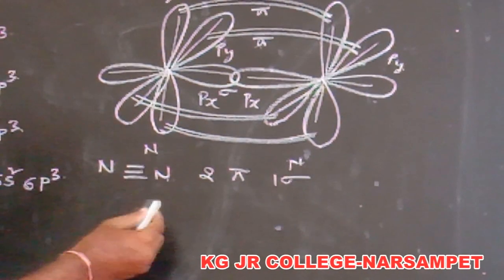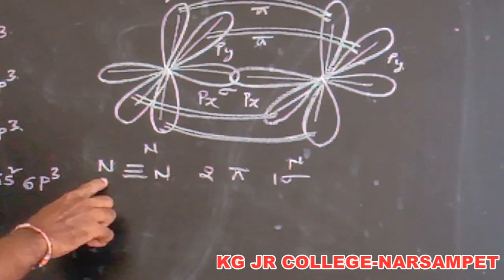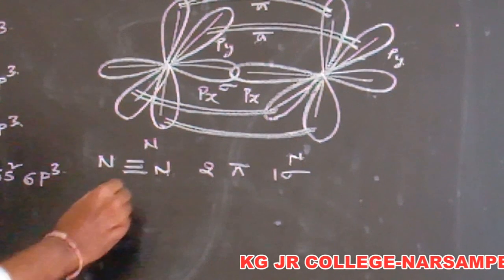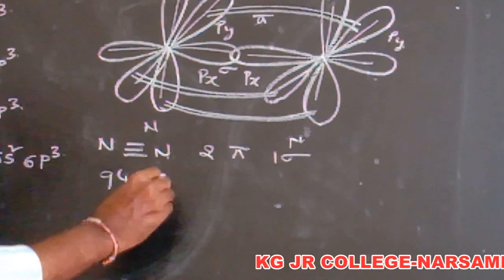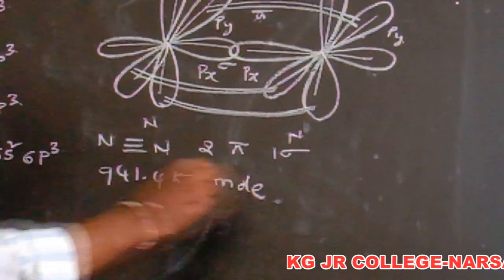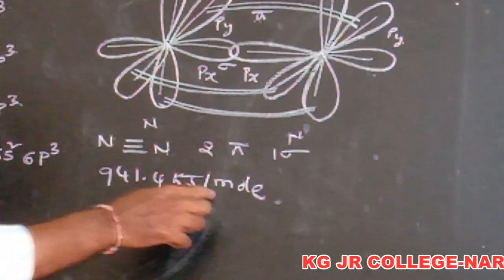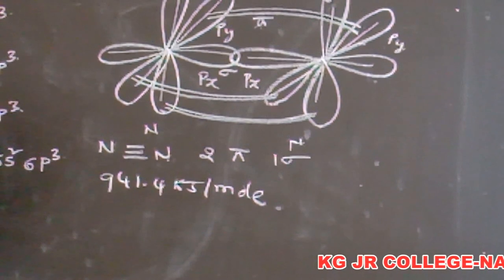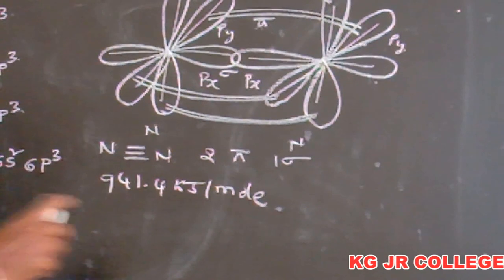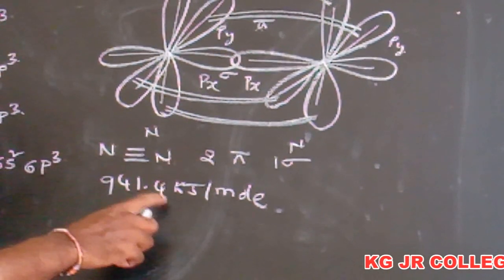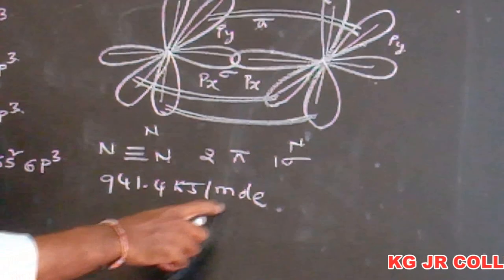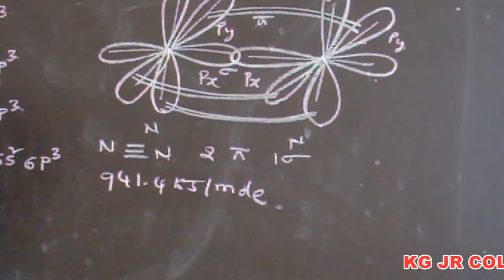The dissociation energy of nitrogen is 941.4 kJ per mole. Nitrogen is inert due to its highly high dissociation energy of 941.4 kJ per mole.